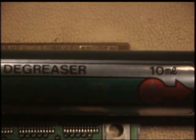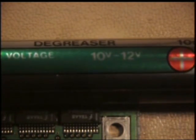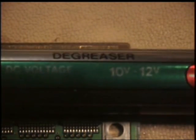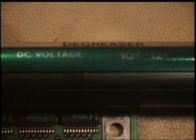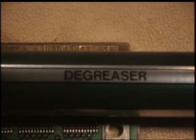The first pen to be used is the degreaser. Follow the plating kit instructions to connect the pen to the electrical source. Note that the degreaser pen uses a 10 to 12 volt DC setting.